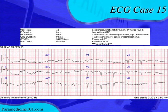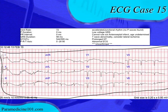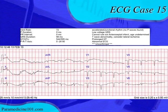Looking further at the EKG, we're wondering why she's having this decerebrate posturing. This posturing is very indicative of brain anoxia — for some reason the brain is not getting oxygen for a certain period of time. We want to rule out head trauma, rule out stroke, and use our 12-lead to investigate. Based on the 12-lead itself, there's not much to see unless you know how to measure the QT interval and QTc interval.